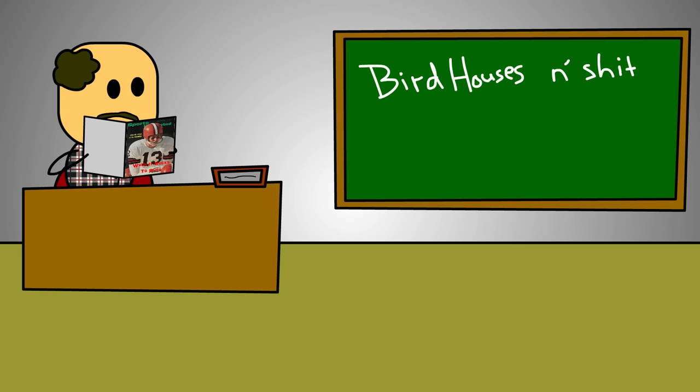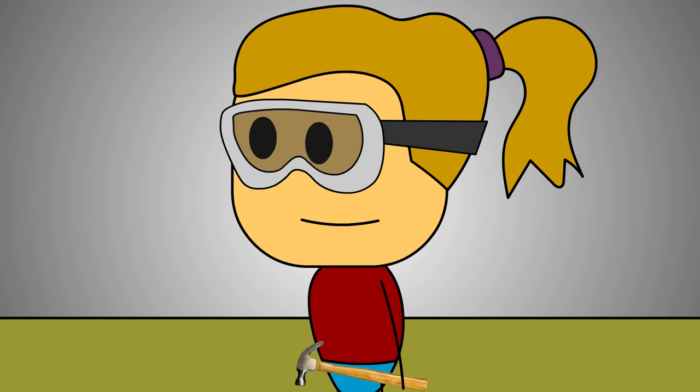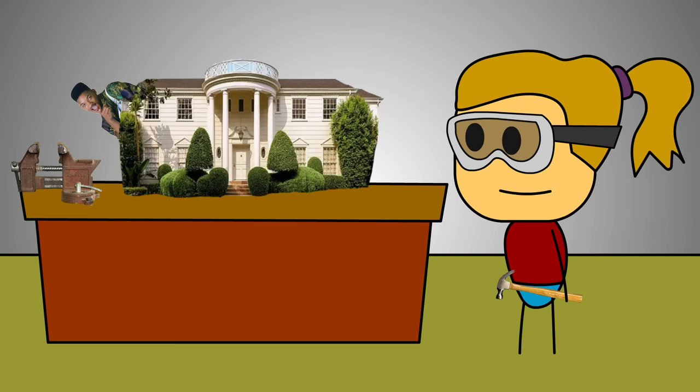But for our final project of the year, we had the task of designing and creating our own custom birdhouses. And boy, you can bet your ass they were some ugly birdhouses indeed. I mean, besides the Bob Vila chick, of course. Her ass over there building the fucking house from Prince of Bel Air and shit.